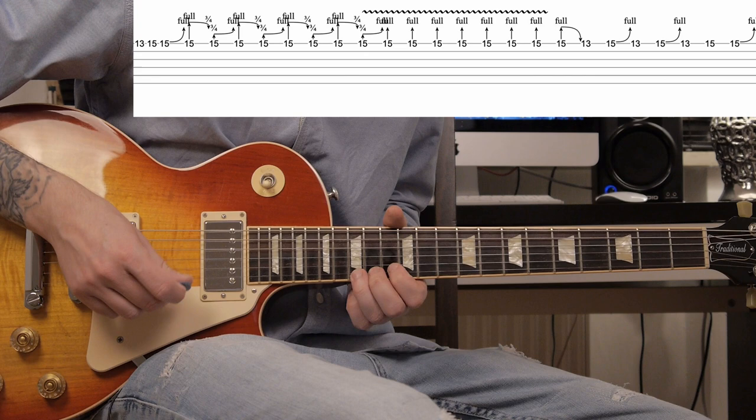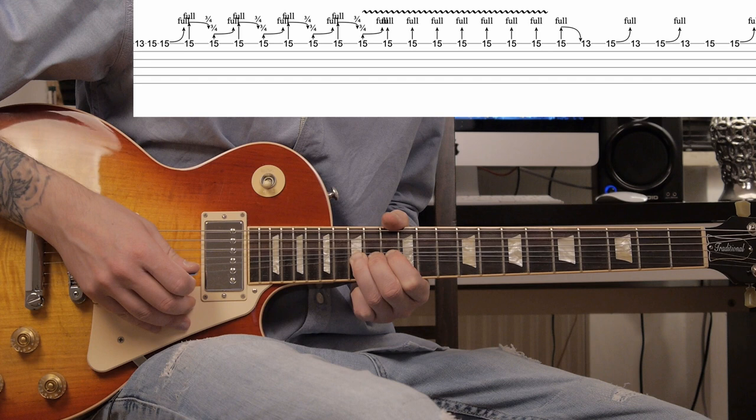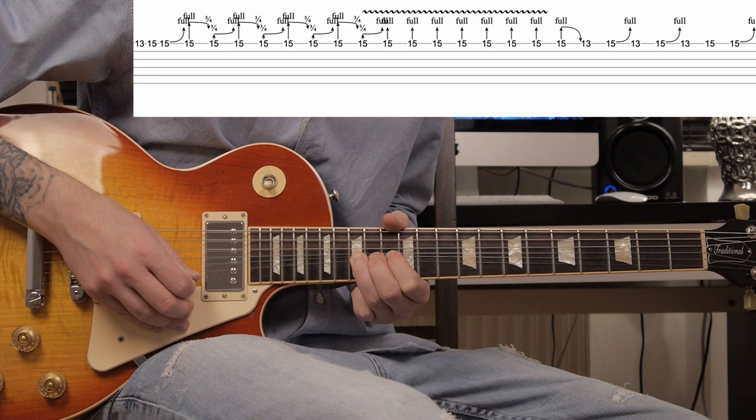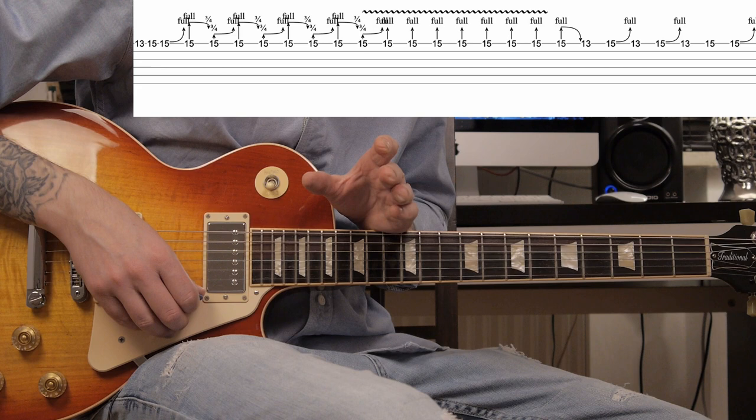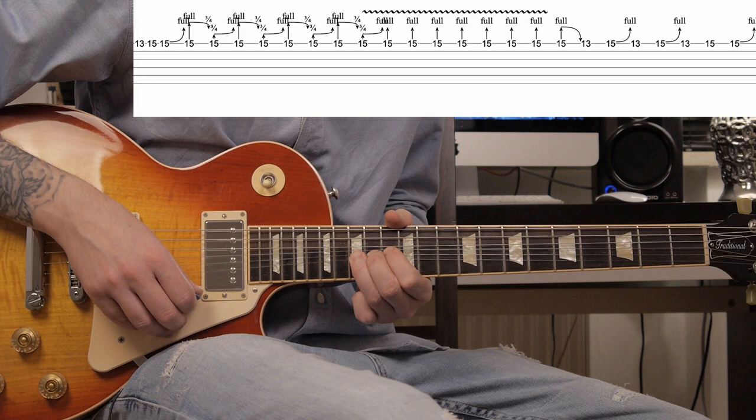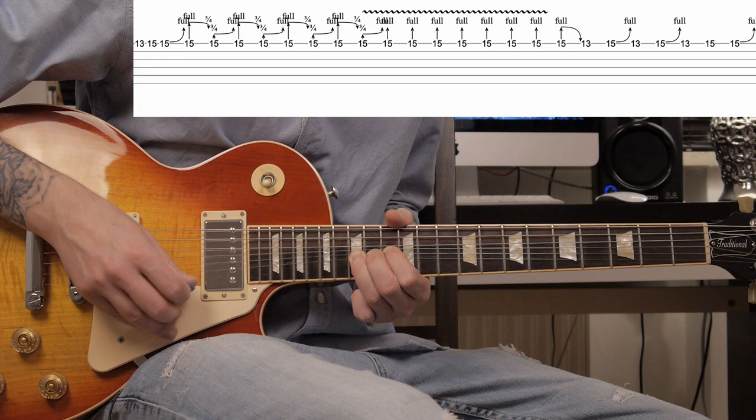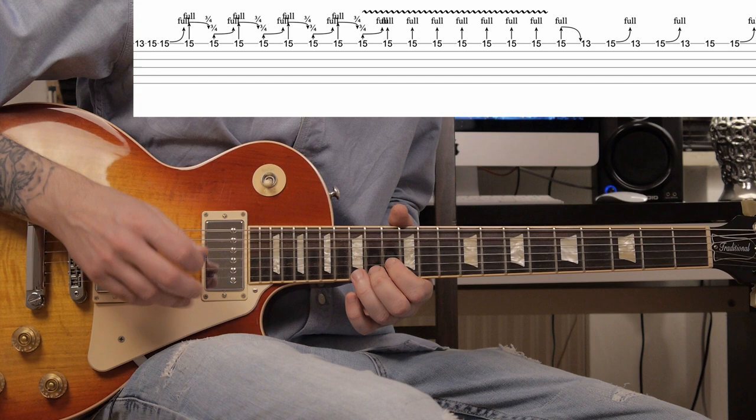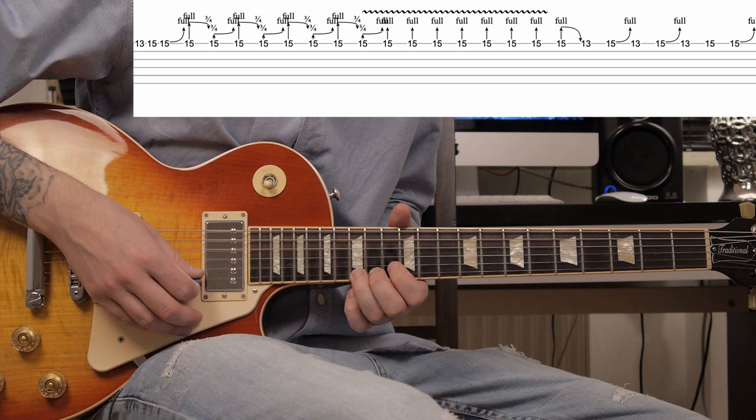So, you bend the note a full tone, release it a quarter tone, and push it back. The next thing that happens is you go back to the full tone bend. You hold it and you play a really, really aggressive vibrato. You may need some practice for that, but it will pay off.